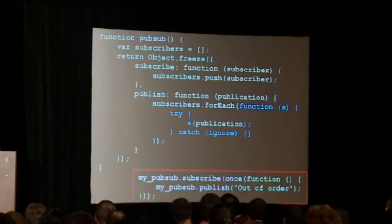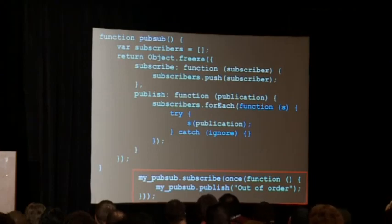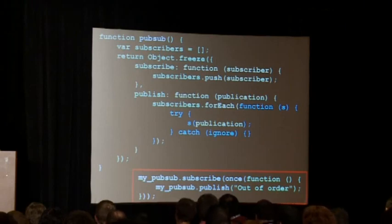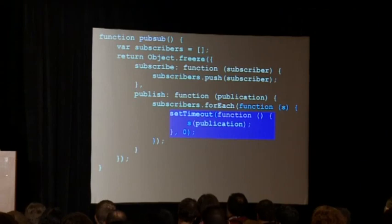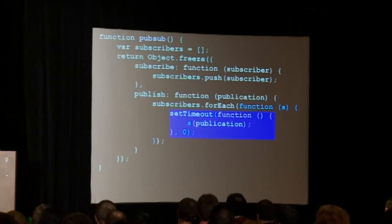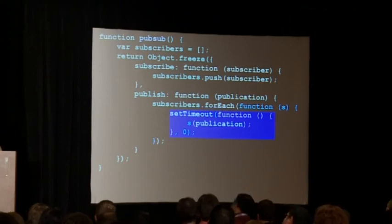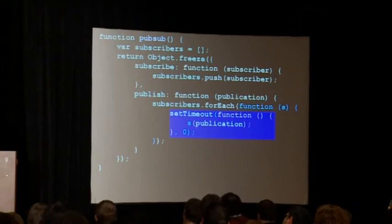If a subscriber publishes as a result of its subscription behavior, it can cause messages to be delivered out of order. We can solve this by using setTimeout or setImmediate to schedule each subscriber callback to happen in a later turn — JavaScript is generally a turn-based system. By doing that, the try-catch is no longer necessary. One of the requirements of working in this environment, especially in Node.js, is that you have to respect the law of turns, and it turns out it's easily done with the right education.